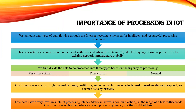Here we will be seeing about the importance of processing in IoT — why we need something to be processed. As the internet is dealing with a vast amount and variety of data flowing through it, this makes a necessity for intelligent and resourceful processing techniques. That necessity becomes very crucial because of rapid development in technologies, whether application-oriented in IoT or any other technology.